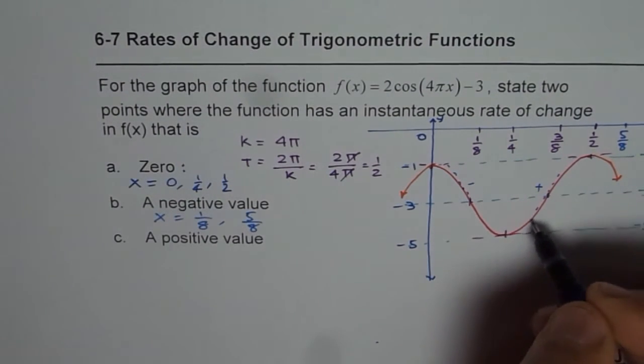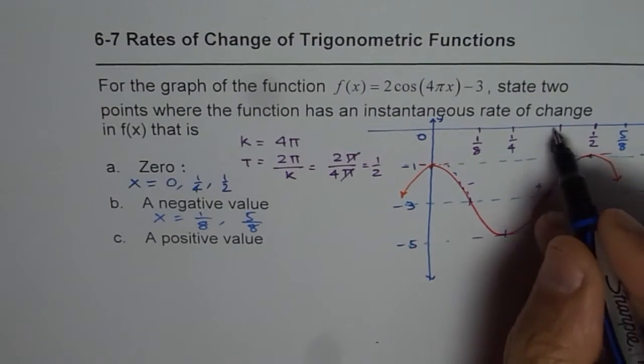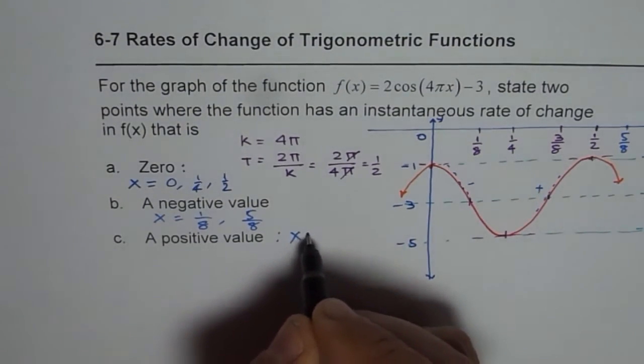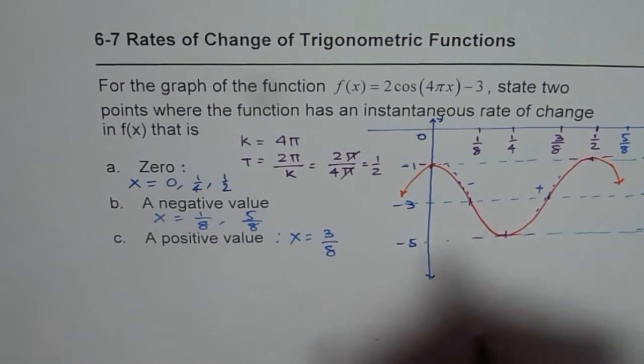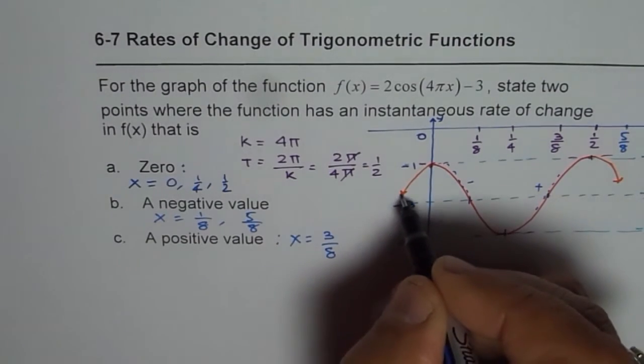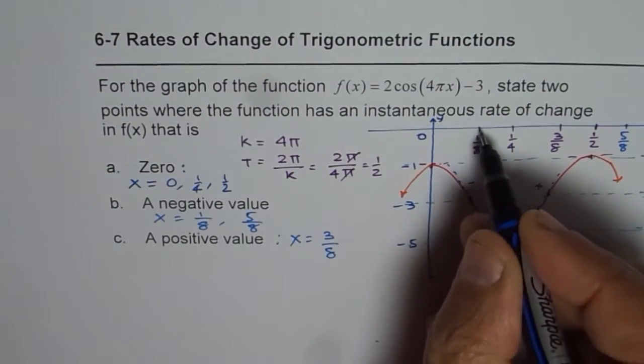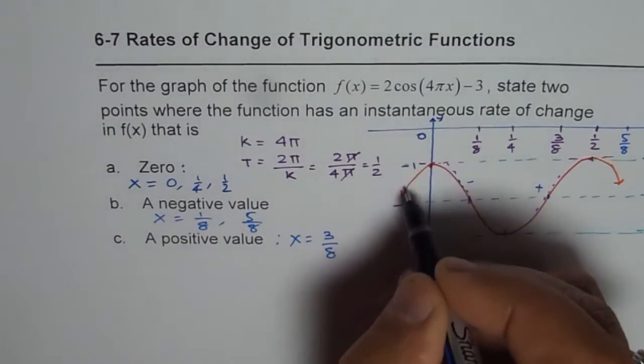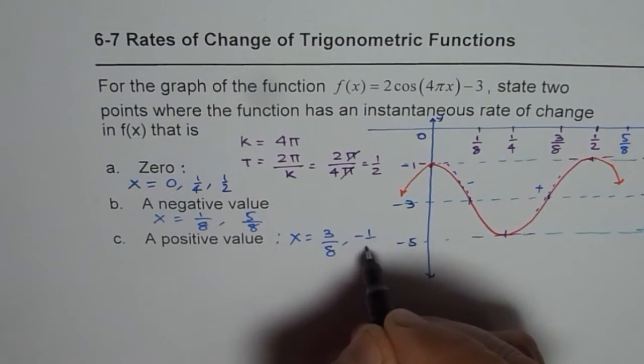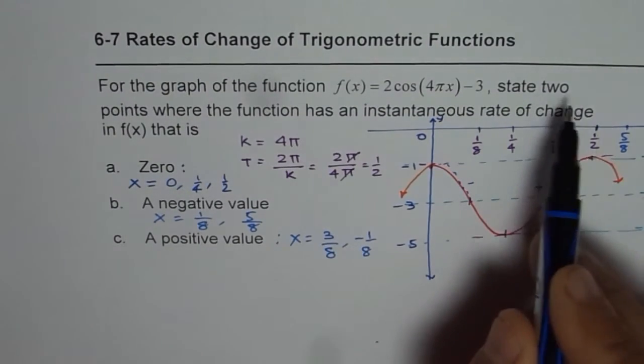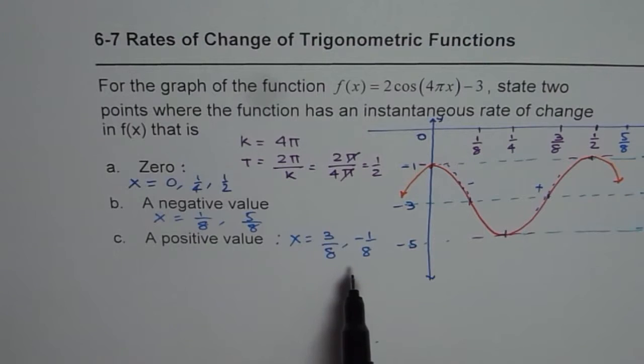Positive value is on this side of the graph where it is increasing. So it is 3 by 8. Let us say x equals 3 by 8. Or we could talk about minus 1 by 8. So this side of the graph. Or minus 1 by 8. So if the interval is not given to you, you are free to choose your points. But anyway, I think that gives you an idea of how to select the right points for instantaneous rate of change being 0, negative or positive. Thank you.